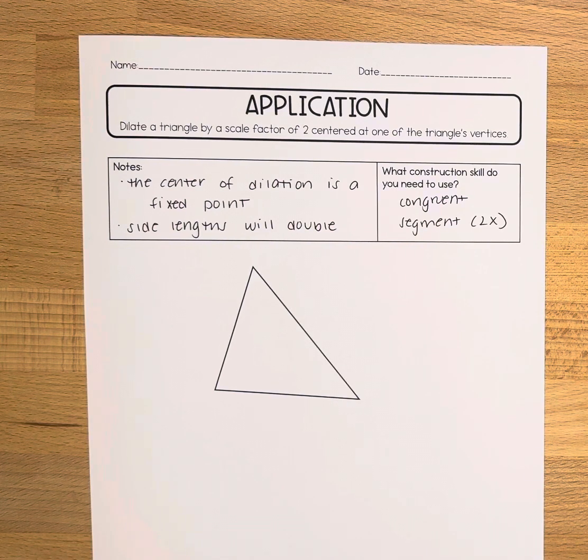And since the scale factor is 2, the side lengths of the given triangle are going to double in length. For this we'll be using the congruent line segment construction and we'll be using it twice.